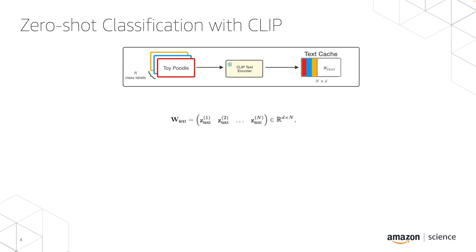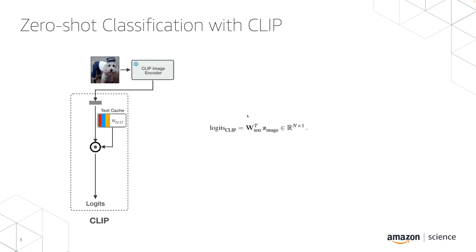In the next slide, I will talk about how zero-shot classification with CLIP actually works. Given a new dataset, let's say ImageNet, you have a few labels from it — ImageNet has 1,000 labels. You pass them through the frozen text encoder and store them separately, getting a text cache of N class labels, where D is the dimension of the embeddings. To classify a new image from the test set, you pass it through the visual encoder, get the corresponding embedding, and match it with all the label embeddings in the textual cache. The similarity score determines which class the image belongs to.